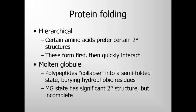Two more points. Protein folding is hierarchical, which means that certain amino acids prefer certain secondary structures. A classic example is that hydrophobic amino acids like leucine, isoleucine, and alanine prefer alpha helices, whereas certain amino acids do not prefer alpha helices, such as glycine and proline — proline is a helix breaker. The ones that do prefer secondary structures form those structures first, then quickly interact.